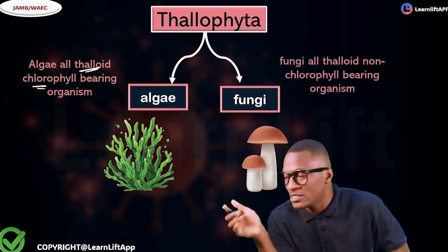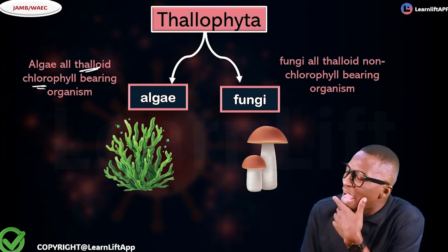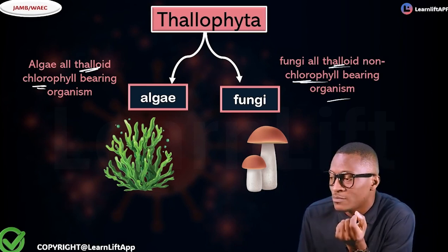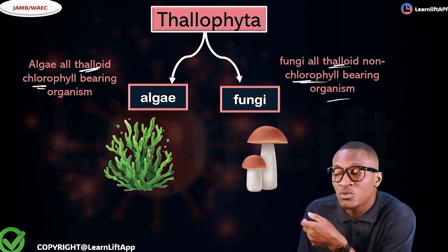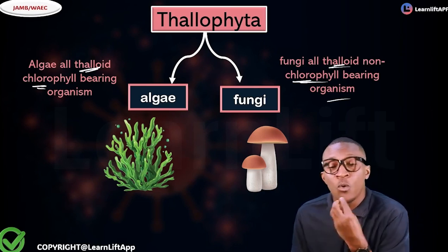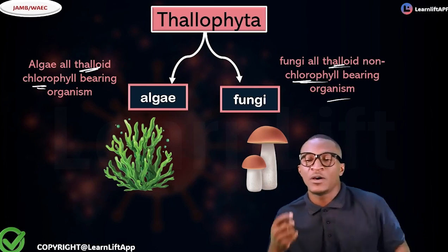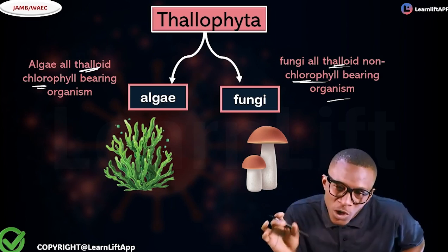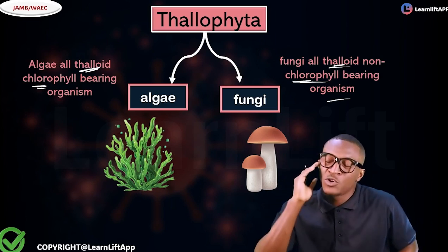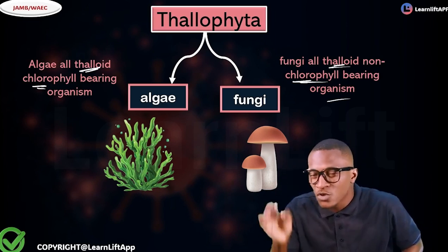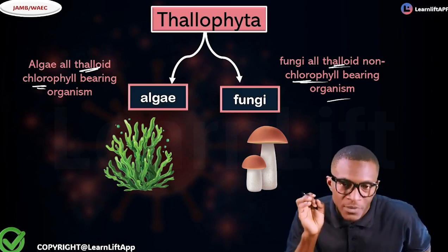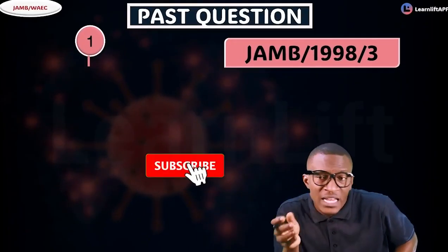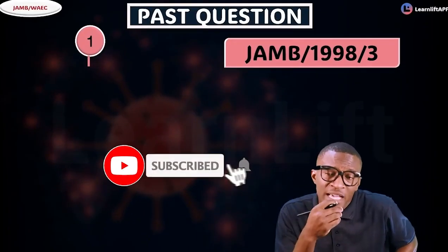What are fungi? Fungi are thalloid too, but they are non-chlorophyll-bearing. Fungi are thalloid non-chlorophyll-bearing organisms. The difference between them is that both are thalloid, but one has chlorophyll. If they ask you for a thalloid non-chlorophyll organism, tell them fungi. If they ask you for a thalloid chlorophyll-bearing organism, tell them algae.